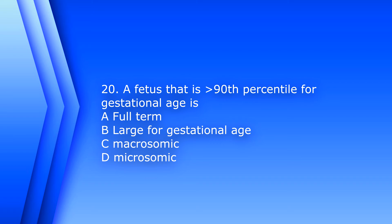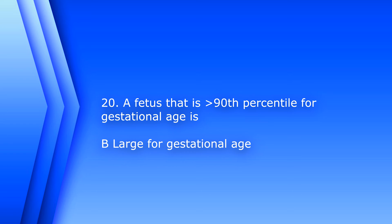Question 20. A fetus that is greater than the 90th percentile for gestational age is: A. Full term. B. Large for gestational age. C. Macrosomic. Or D. Microsomic. The answer is B. Large for gestational age.